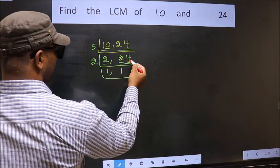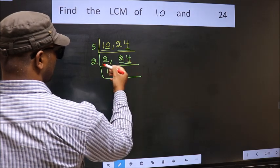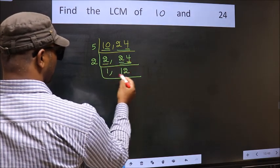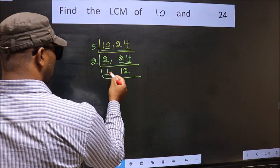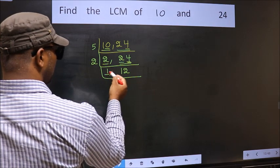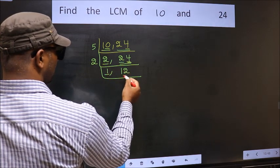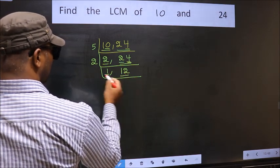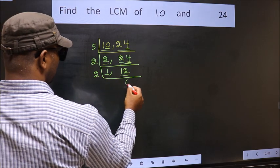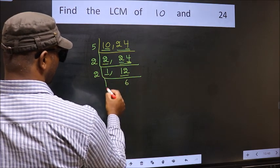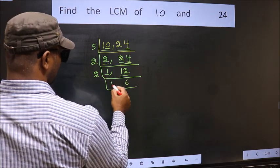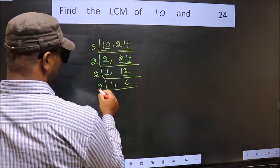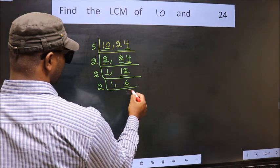The other number 4: when do we get 4 in the 2 table? 2 times 2 is 4. Now we got 1 here, so focus on the other number 12. 12 is 2 times 6 equals 12. Now 6 is 2 times 3 equals 6.